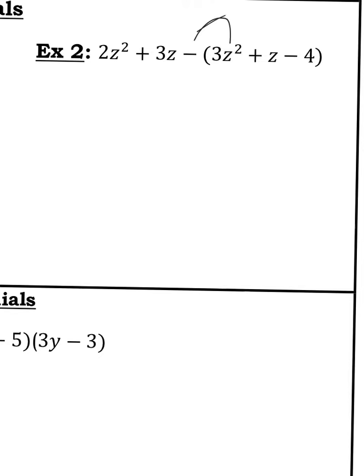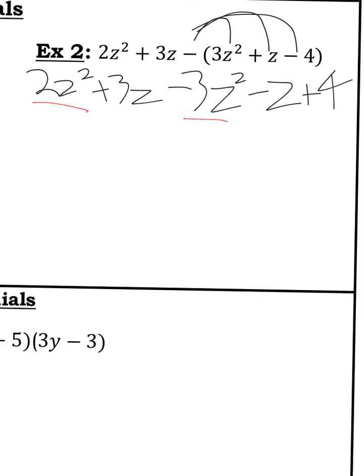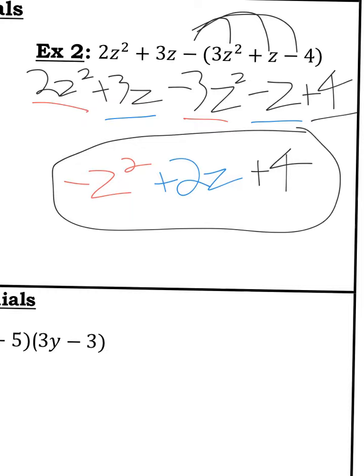So here's example 2. I'm distributing the negative over here. So I'll rewrite it. 2z squared plus 3z minus 3z squared minus z plus 4, just flipping those signs. So it looks like I have a 2z squared minus 3z squared. So that'll leave me with negative z squared. And then I have a 3z minus z, so that's 2z. And then I have this plus 4 on the end that's just by its lonesome. So final answer.